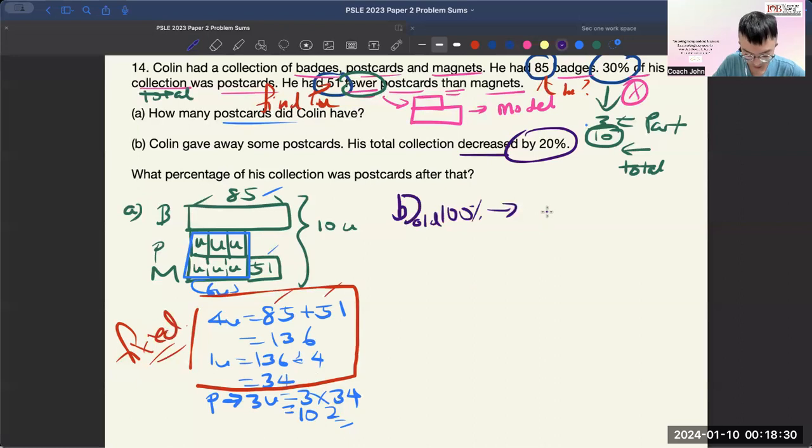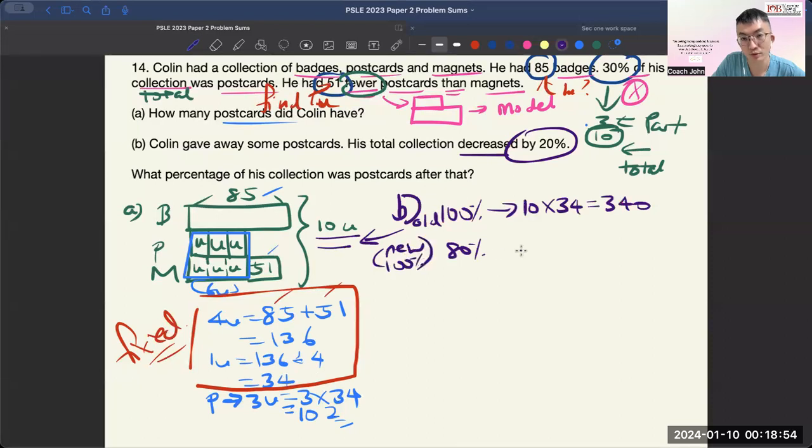So let's figure out the 100%. The old 100%. This is the old one. The old 100%, you can continue from here. So 1U is 34. Total is 10U. This is the old 100%. So 10 times 34, you get 340. And then the 80%, which is the new 100% that we need to work with. So this 80% is from here. So 340 over 100 times 80, which equals to 272.